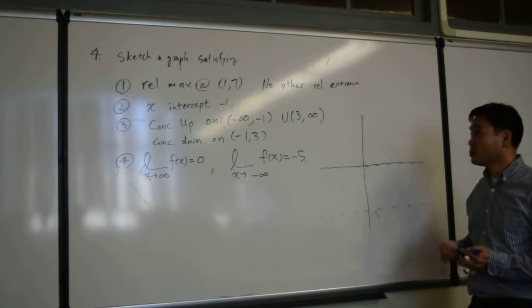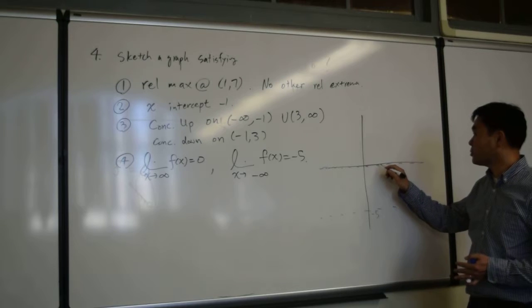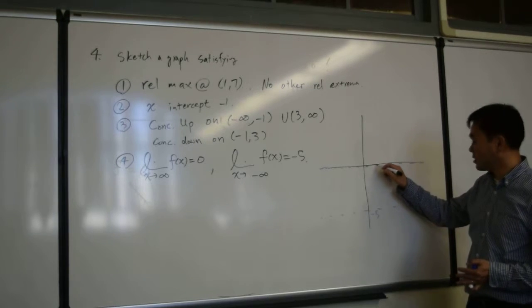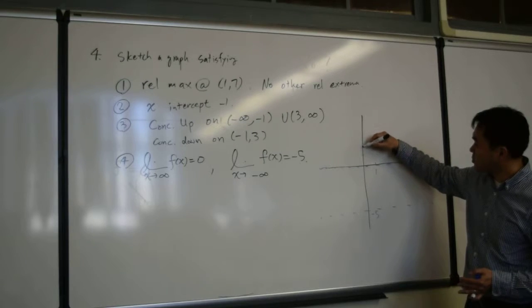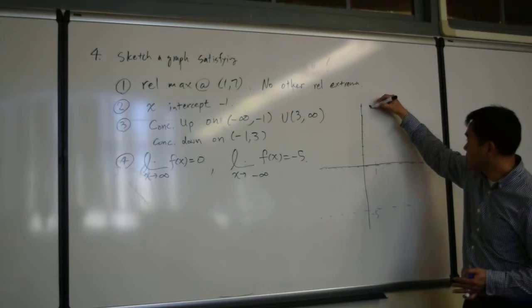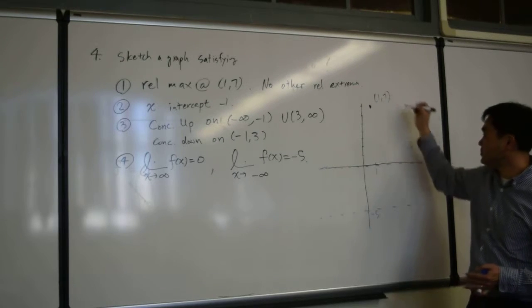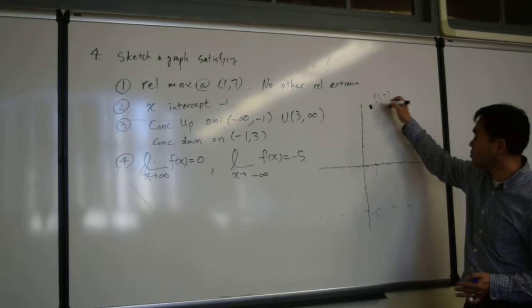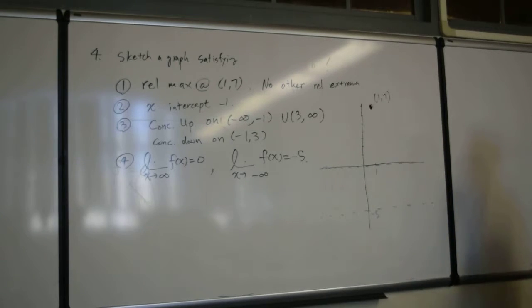And then 1 comma 7 is a point it has to pass through. So let's say here's 1, and 1, 2, 3, 4, 5, 6, 7. This point is 1 comma 7. I need the graph to pass through this point.